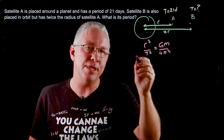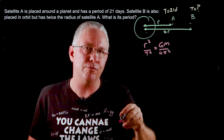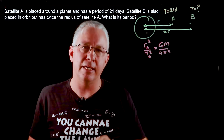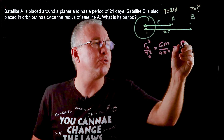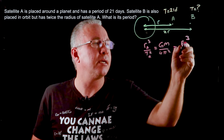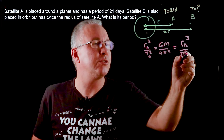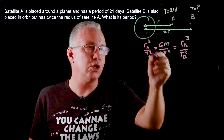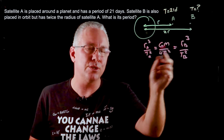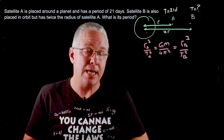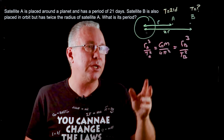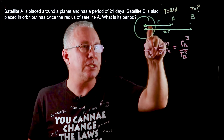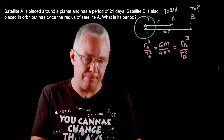We don't know M, but with Kepler's third law this ratio is true for all satellites. So if this holds for satellite A's R and T, it also holds for satellite B. Since both sides equal the same constant, we can ignore the middle section and equate the two ratios directly — and we don't need to use SI units, just the values we have.